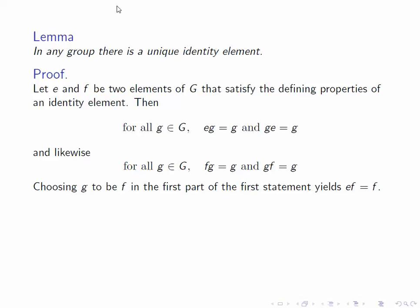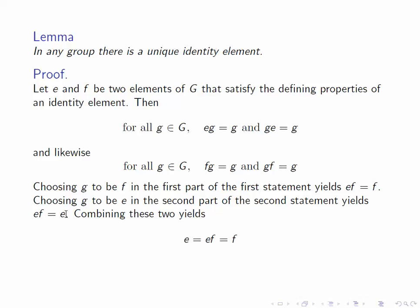Now these are universal statements, so we're allowed to pick G to be any element of the group. So for this first property on the first line, let's pick G to be F. That yields EF equals F. Similarly, for the second property on the second line, let's pick G equal to E, and that tells us that EF is equal to E. Putting these together yields that E is equal to EF and that EF is equal to F. So that tells us that E is equal to F as required.